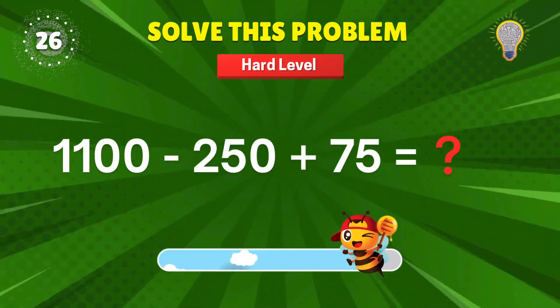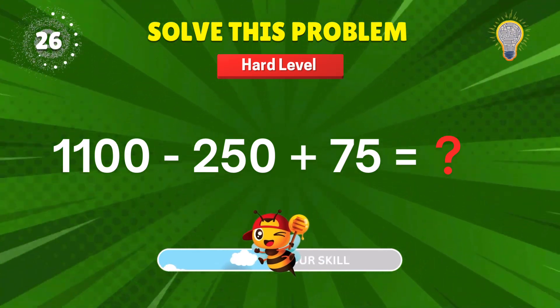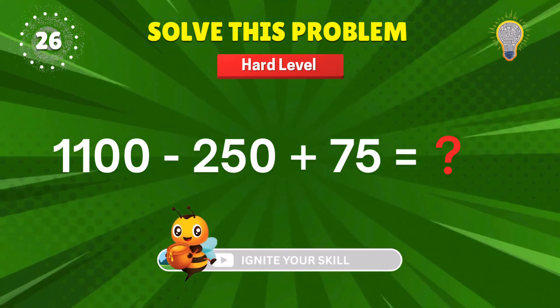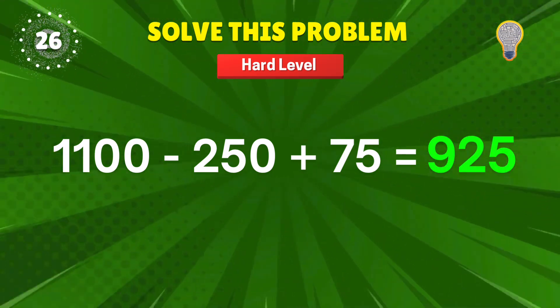1100 minus 250 plus 75? Calculator sweating yet? 925. Precision power. Another 1 point.